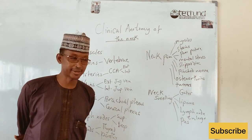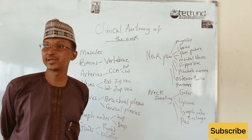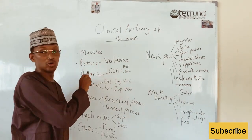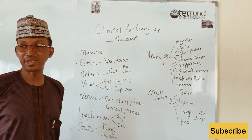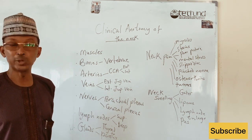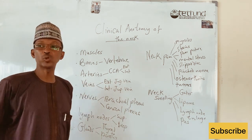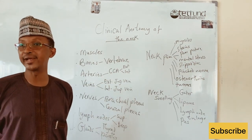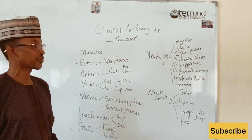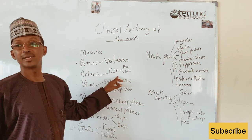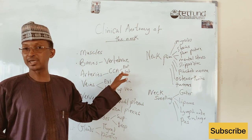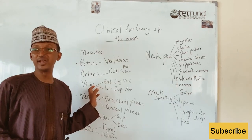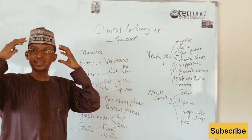In the clinical anatomy of the neck, like any other part of the body, we have muscles of the neck, bones — the cervical vertebra, seven of them from C1 down to C7 — and neurovascular bundles that include arteries. The major arteries of the neck are the common carotid arteries on either side, which divide into the external carotid and internal carotid arteries. Similarly, we have veins that drain the structures of the head and neck.